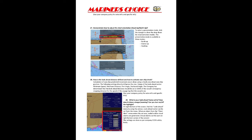How is the look ahead distance set and how to activate it? In the right-hand bottom corner there are many options, including a Look Ahead option. As you can see on screen, you can put a vector, set vector timing — 10 minutes, 12 minutes, or as desired — and set how much you want for bow and stern.